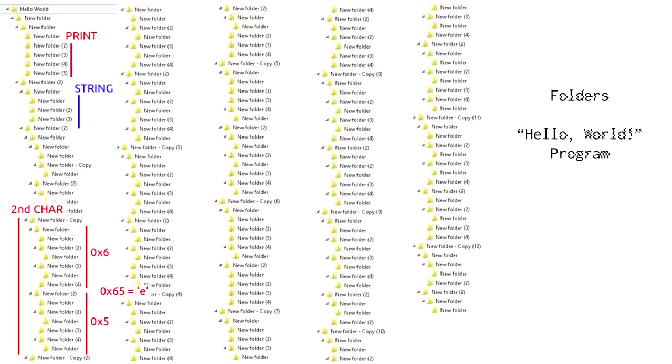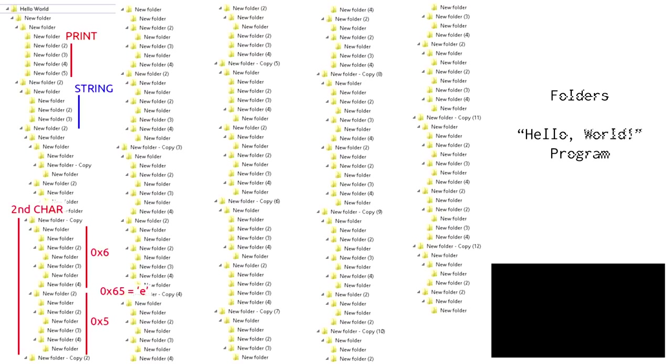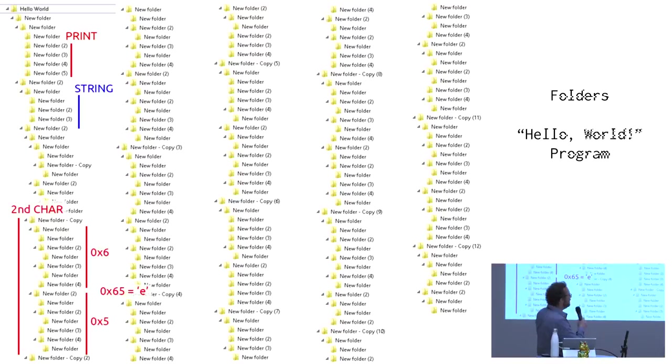So this is a Hello World program. You can see I've labeled it Hello World at the top. Hello World has a bunch of folders in it. Each one is a command. Each of those commands has a folder, and the number of folders within that folder tell it what kind of command it is, then the second folder has other content, whatever expression is passed to that command, and so on.